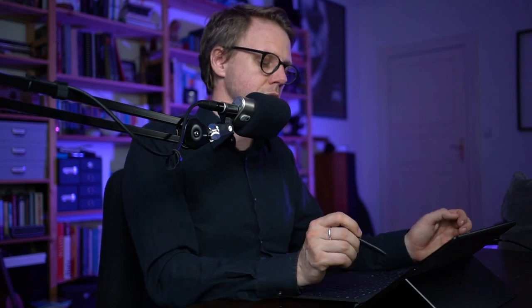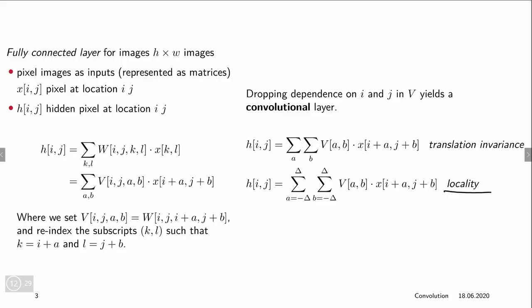However, it's still not local. In order to make it local instead of going over all the possible offsets we actually restrict our offsets also to lie in a certain range. So we only look at a local region of size 2 delta, so we start our offsets at minus delta and go up to plus delta for both the height and the width, which would be the same as if we just say our weights outside that region are zeros.